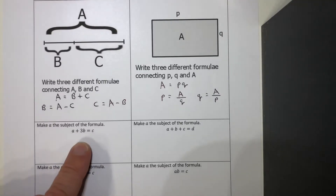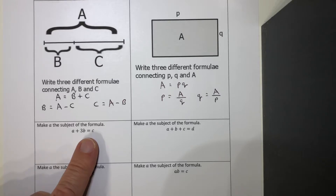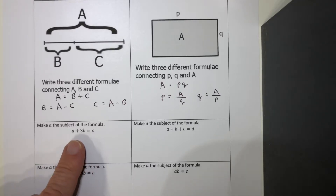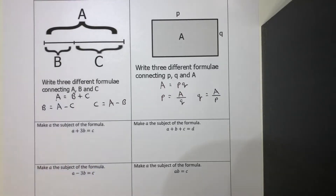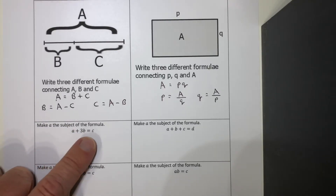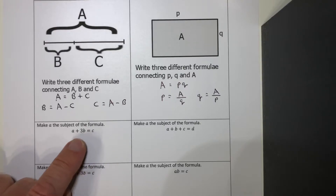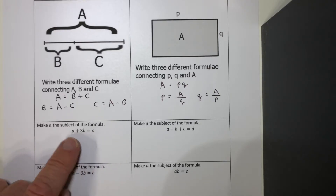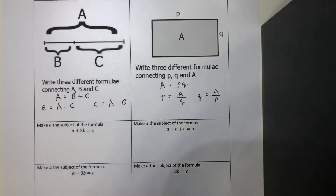When we see a formula written like a plus 3b equals c, people ask what am I supposed to do - what's b equal to? That's the whole point - you don't know what a, b, or c are, and that's fine, it's a formula. You're not supposed to know the values. So the word 'subject' basically means what you are ending up with. At the moment the subject is c - you're finding out what c equals. If you wanted to make a the subject, you'd need a equals something.